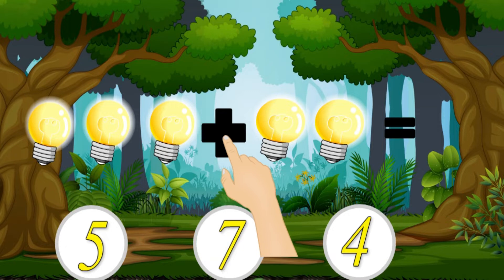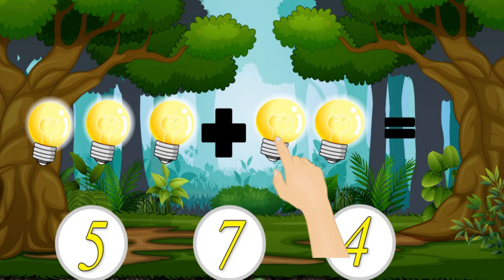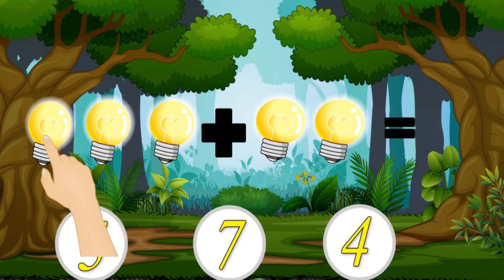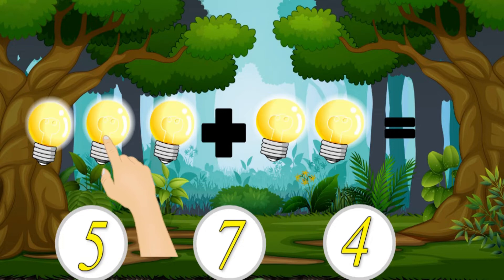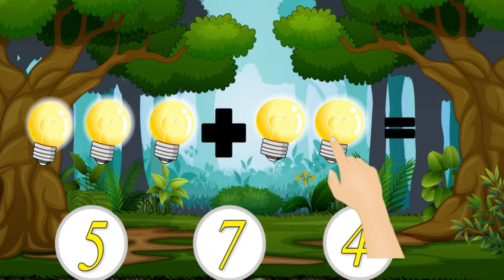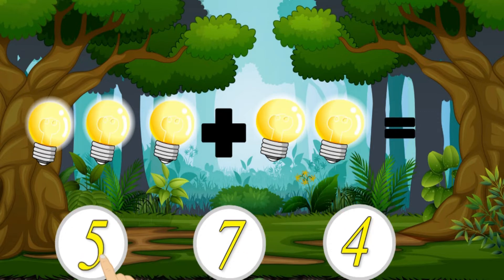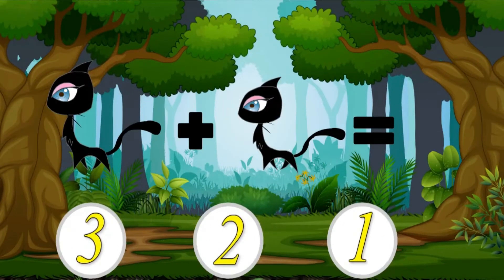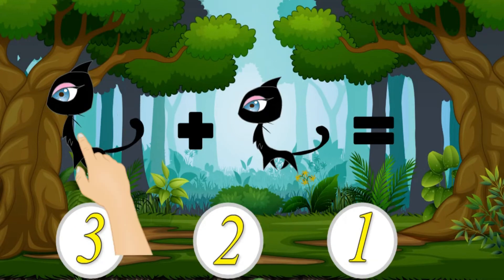3 plus 1, 2 equal. Now let's count together: 1, 2, 3, 4, and 5. 5 is the right answer. There are 5 birds.